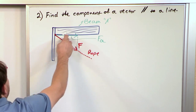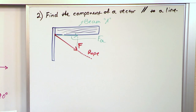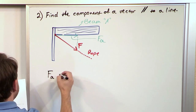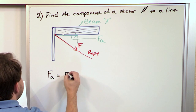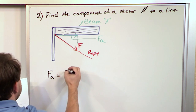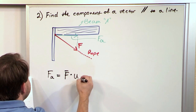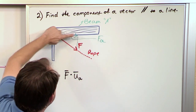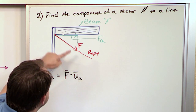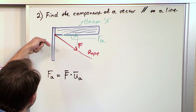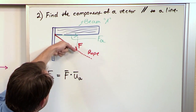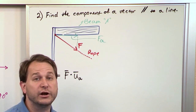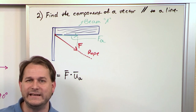But if you don't have the angle, you can also use the dot product. It turns out that F_A is also equal to the force vector F dotted with a unit vector in the A direction. This horizontal direction along the member defines a direction; we can find a unit vector in this direction. If we dot the force vector with that unit vector, we get the component in the direction we seek.